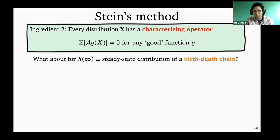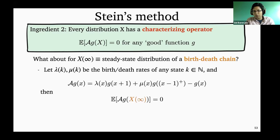This turns out to have a surprisingly simple answer. For a birth-death chain with birth rate λ_k and death rate μ_k in state k, the correct characterizing operator is: λ(x)·G(x+1) + μ(x)·G(x-1) − G(x). Essentially, you start at some state x, take one step according to this Markov chain, and look at G after the step minus G before the step.